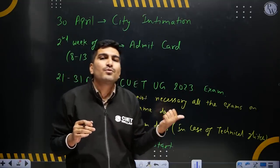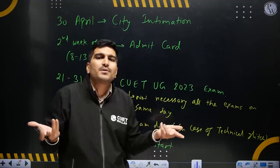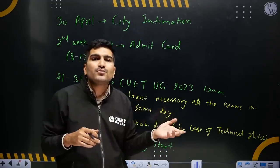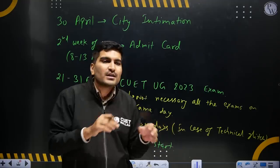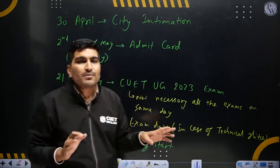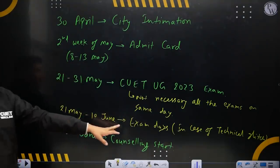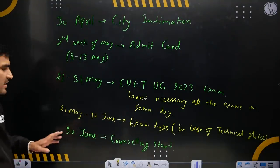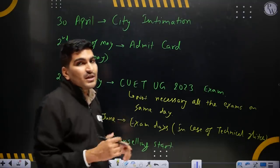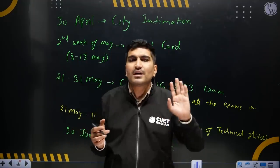If there were no technical issues, the next date would be within 10 days for that center. If the exam is extended due to a technical glitch, those exams will be conducted again. Then from June, counseling will begin, provided the exam is completed by May 31st.